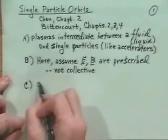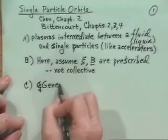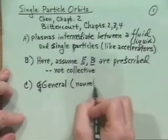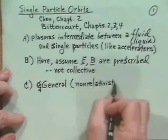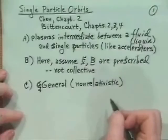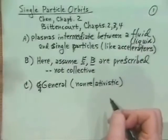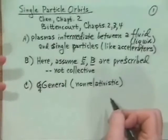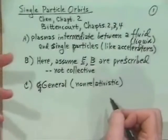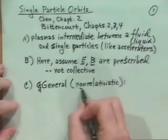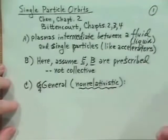The general equation of motion for particles is non-relativistic. In most plasmas, we're interested in temperatures of say 1 to 10 kilovolts, and that's much less than the rest mass energy of electrons at 511 kilovolts, and certainly much less than the rest mass energy of a proton at about 1 GeV. So most of the time we're quite happy with a non-relativistic assumption.